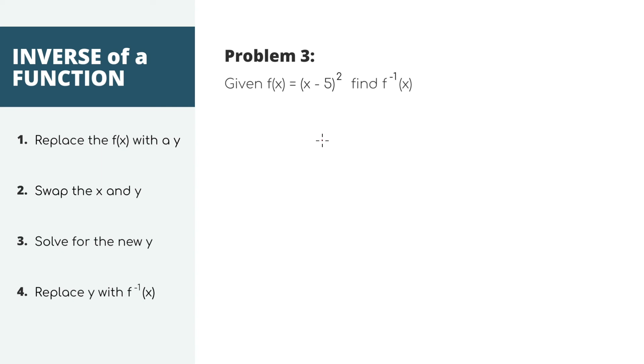Next problem, let's find the inverse of this expression. Again, let's first replace the f of x with the y. Now let's swap the x and the y. Next, we need to solve for the new y. So we need to isolate y by undoing everything that's being done to it. Sort of like our last problem, you'll notice that the y is stuck inside the squared part. And to undo it, we need to do the opposite of a square, which is a square root. And let's do it to both sides.